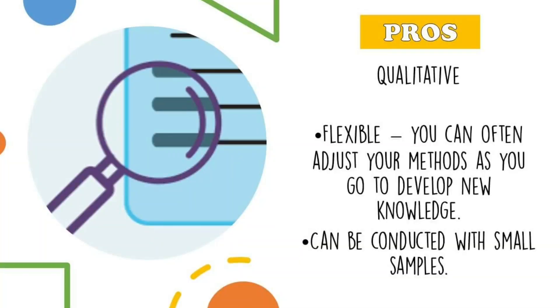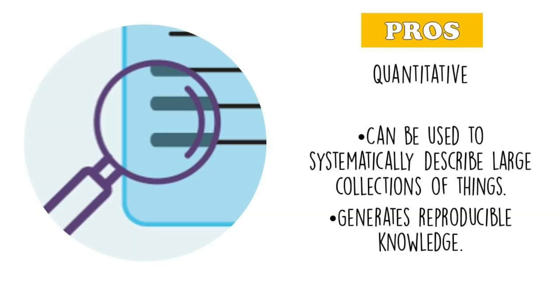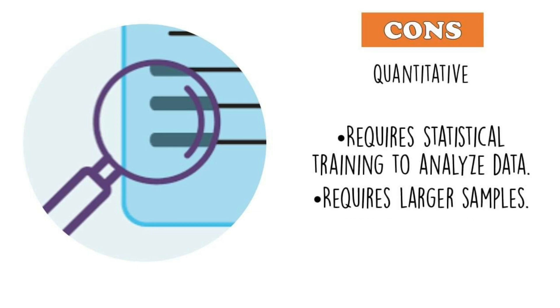Let us talk about the pros and cons of quantitative and qualitative data. For qualitative data: it is very flexible, you can often adjust your methods as you go to develop new knowledge, and it can be conducted with small samples. However, it can't be analyzed statistically or generalized to broader populations, and it's difficult to standardize. For quantitative data: it can be used to systematically describe large collections of things and generates reproducible knowledge, but it requires statistical training to analyze and requires larger samples.